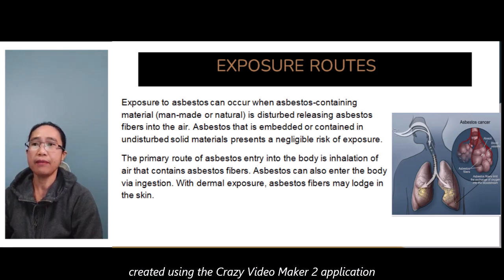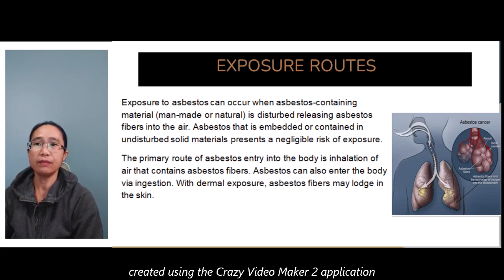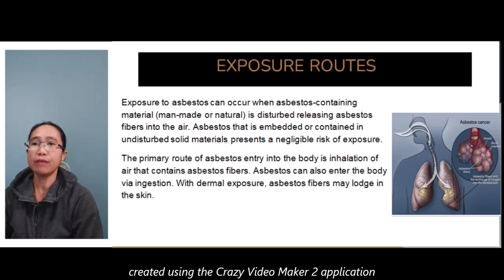Exposure routes: exposure to asbestos can occur when asbestos-containing material, man-made or natural, is disturbed, releasing asbestos fibers into the air. Asbestos that is embedded or contained in undisturbed solid material presents negligible risk of exposure. The primary route of asbestos entry into the body is inhalation of air that contains asbestos fibers.